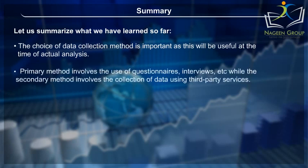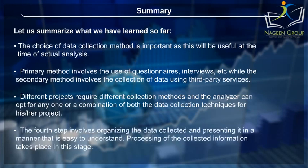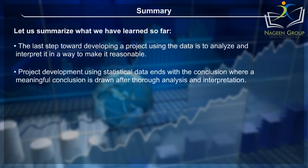After the target group is decided, the next step involves the collection of data using primary or secondary or both methods. Primary method involves the use of questionnaires, interviews, etc., while the secondary method involves the collection of data using third-party services. Different projects require different collection methods. The fourth step involves organizing the collected data and presenting it in an easy-to-understand manner. The last step is to analyze and interpret the data, and project development using statistical data ends with a meaningful conclusion drawn after thorough analysis and interpretation.